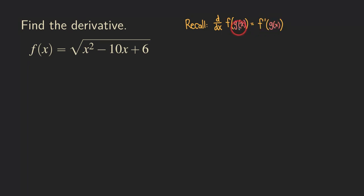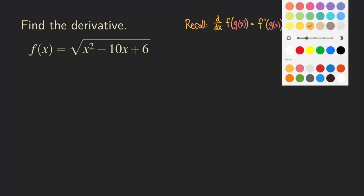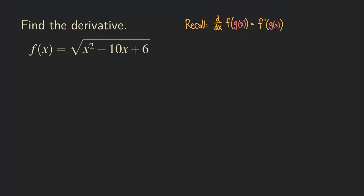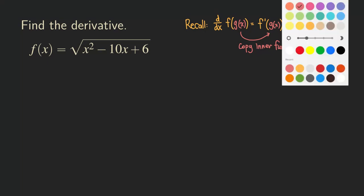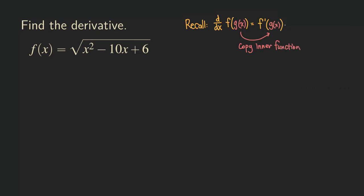So you are really just copying the inner function from there. Then we need to multiply by the derivative of the inner function — that's g prime of x. So that's what the chain rule is talking about. In order for you to master the chain rule, you need to be able to identify which one is the outer function and which one is the inner function.